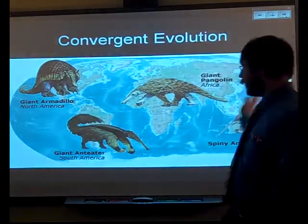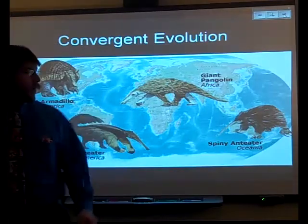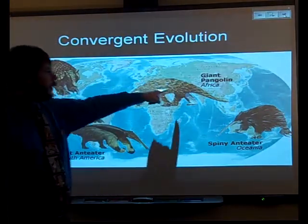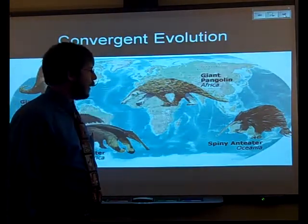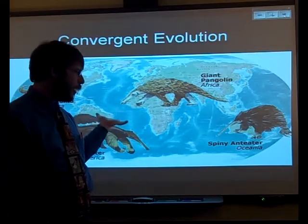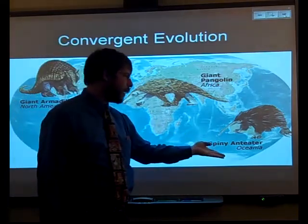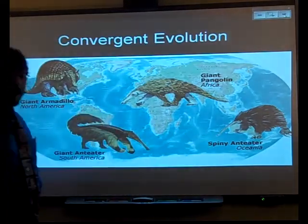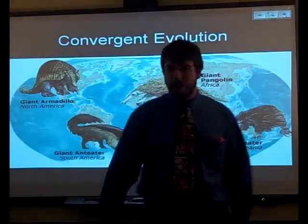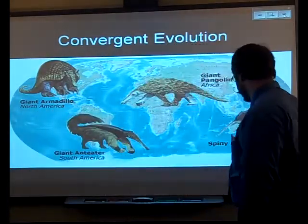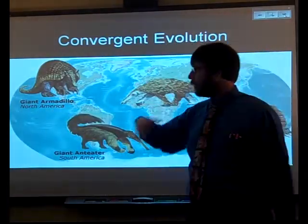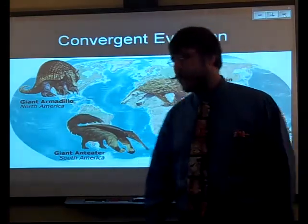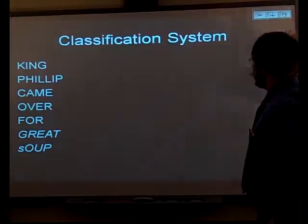A great example: all these ant-eating things. In America, we got the armadillo, the actual ant-eater, the giant pangolin, which is the African ant-eater, and the spiny ant-eater. Even though two of these are called the ant-eater, they're actually not really related to each other at all. All these things look crazy and have a big weird snout, but they're not from a common ancestor very, very recently.